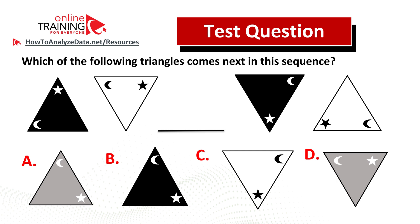Before revealing the solution, I would like to point at two patterns we see in this problem. The first is the pattern of colors. You have a black triangle, white triangle, then a missing triangle, then black triangle and white triangle. So something might be different from black and white here. You also have a pattern of moon and star, and moon and star move inside the triangle.